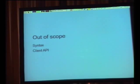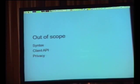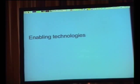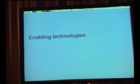Out of scope for now is syntax, client API, and privacy — mainly because our best use case right now is to make a distributed protocol that can be used around the world. You could use email for privacy. OStatus is really what we're calling a protocol mashup — but it's really just using the protocols that are already out there.